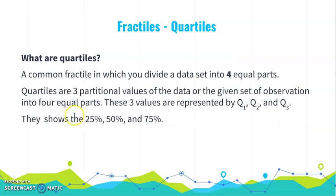The fractile we're going to look at the most are quartiles. Instead of dividing our data set into 10 or 100 equal parts, we're dividing it into four equal parts. Quartiles, we're going to have three of them because to get four equal parts, we need to have three divisions. These values are represented by Q1, Q2, and Q3, which means that at Q1 we're going to have 25% of the data below, Q2 50% of the data below, and Q3 75% of the data below.